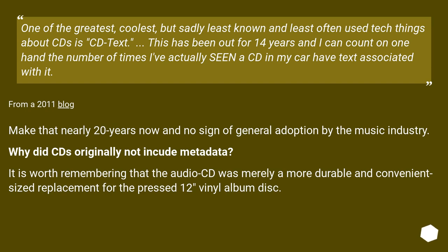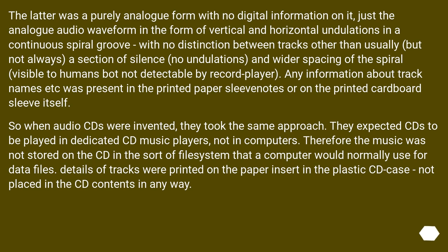Why did CDs originally not include metadata? It is worth remembering that the audio CD was merely a more durable and convenient-sized replacement for the pressed 12-inch vinyl album disc. The latter was a purely analog format with no digital information on it — just the analog audio waveform in the form of vertical and horizontal undulations in a continuous spiral groove, with no distinction between tracks other than usually a section of silence, no undulations, and wider spacing of the spiral, visible to humans but not detectable by a record player. Any information about track names was present in the printed paper sleeve notes or on the printed cardboard sleeve itself.